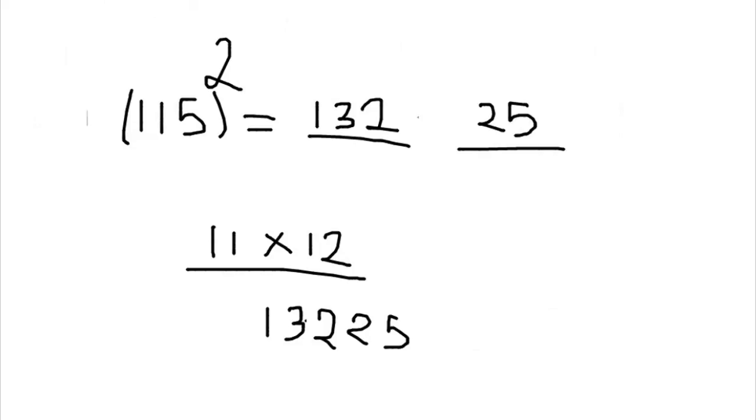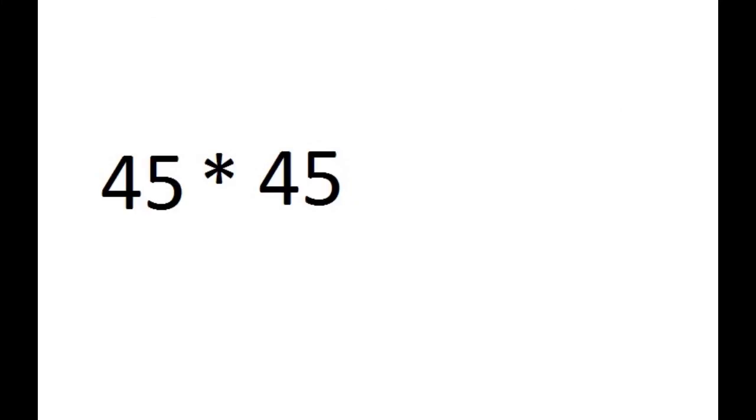Now try to find out the square of 45 in your mind. So it will be like last two digits will be 25, and before that it will be 4 multiplied by 5, which is 20. So the answer will be 2025.